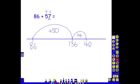We wanted to add on 7. We've only added 4 of that 7, so we've got 3 left to jump. 140 add 3 is 143, giving us our final answer.